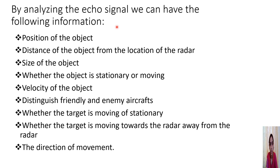By analyzing the echo signal, we can have the following information: the position of the object, the distance — that is, the range of the object from the radar. This was the primary concern of the elementary radar. But we can also extract more information, such as the size of the object, whether it is stationary or moving, the velocity of the object, distinguishing friendly and enemy aircraft, whether the target is moving towards or away from the radar, and the direction of movement.